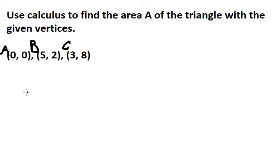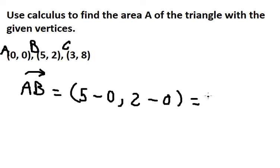Now we need to find vector AB. That is about number 5 minus number 0, and number 2 minus number 0. And we have 5, 2.